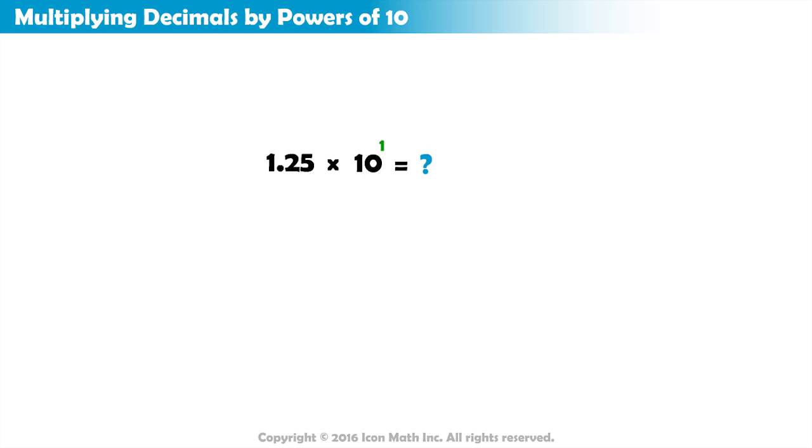If we apply the same rule as in whole numbers and simply add a zero to the right end of the number, we won't get the correct answer. This is because 1 and 25 hundredths is the same as 1 and 250 thousandths. The zero at the end represents no value.